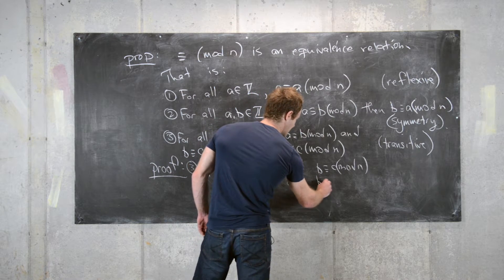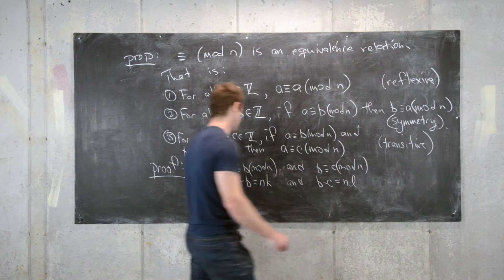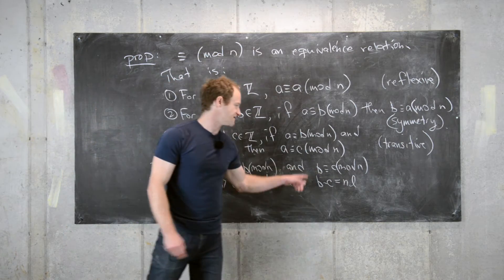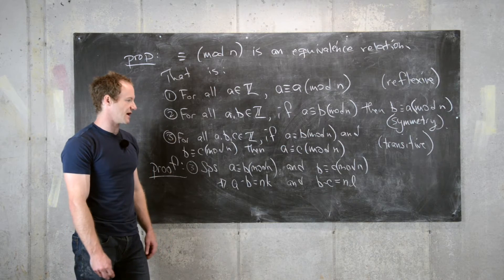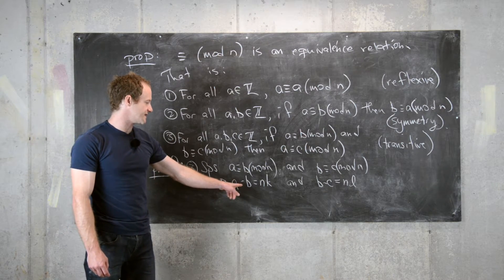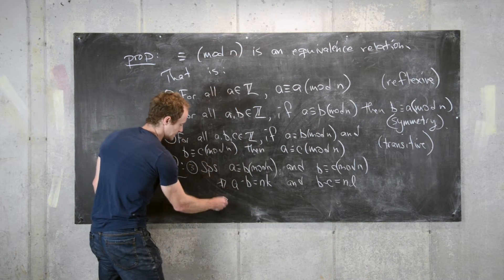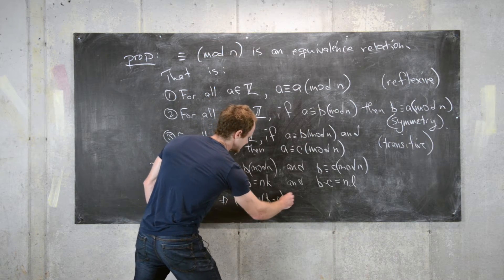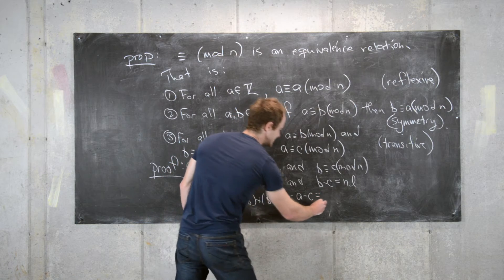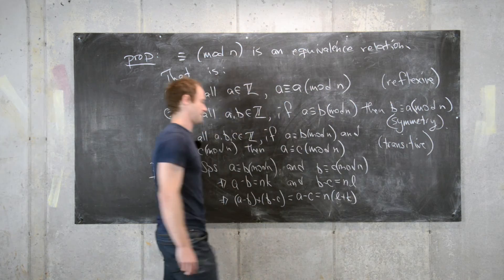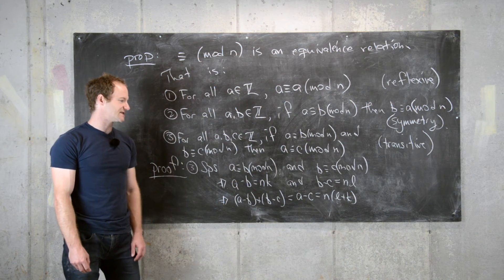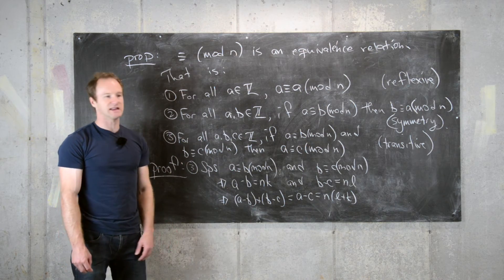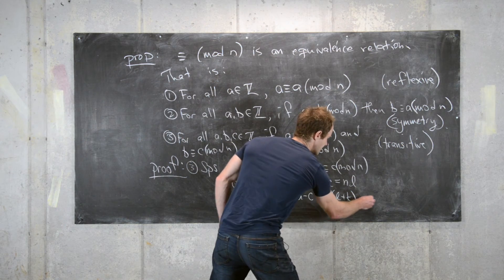Similarly, b minus c equals n times l for some integer l, since n divides b minus c. Adding the two equations gives a minus b plus b minus c, which equals a minus c, equal to n times (l plus k). So a minus c is a multiple of n, meaning n divides a minus c.